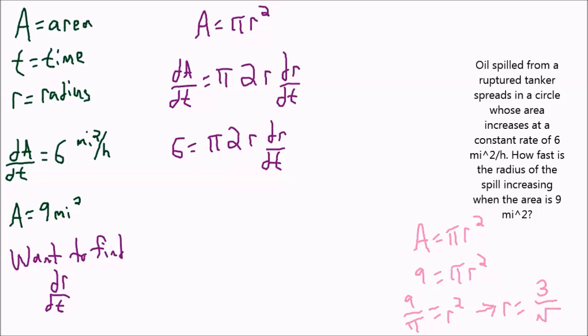So now that we know what R is, we're going to substitute that into the formula that we were working with. So that means I'm going to have 6 equals pi times 2 times 3 over square root of pi times dr over dt. Now I want to get dr over dt by itself, which means that we're going to divide pi, 2, and 3 over square root of pi to the other side. And that's going to leave us with 6 over square root of pi times 6 equals dr over dt. These 6's will cancel, so that means that dr over dt is equal to 1 over the square root of pi.